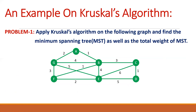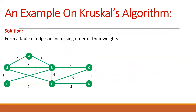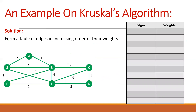Let us see an example and apply Kruskal's method to find the minimum spanning tree and calculate its total weight. This is the given graph with all weights mentioned on the edges. We start by forming a table of edges in increasing order of their weights. The lowest weight in this graph is one, and there are three edges with weight one: AB, FB, and CD. So we write AB weight one, BF weight one, CD weight one.